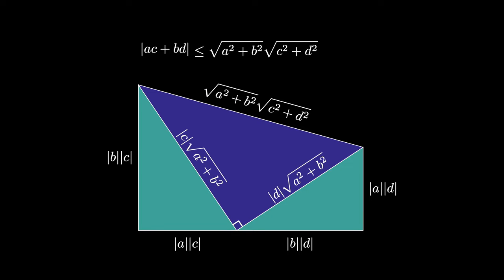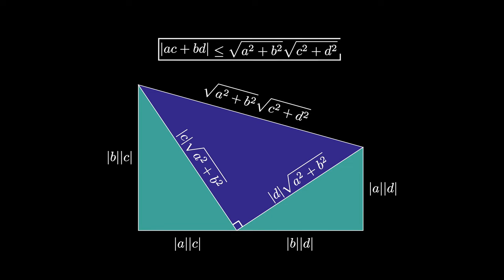Therefore, the absolute value of AC plus BD is less than or equal to the square root of A squared plus B squared times the square root of C squared plus D squared, where A, B, C, and D are real numbers. This is often referred to as the two-variable Cauchy-Bunyakovsky-Schwarz inequality.